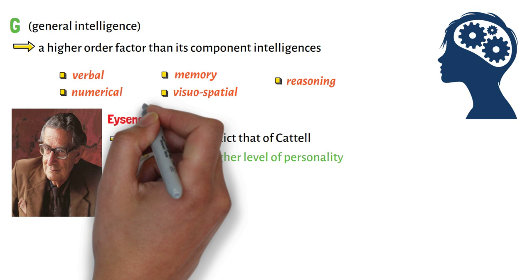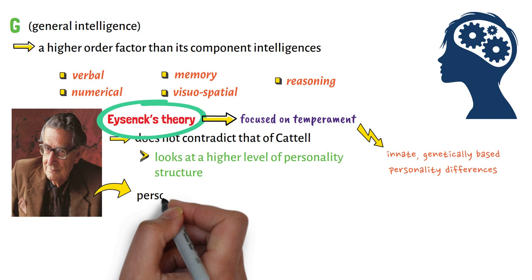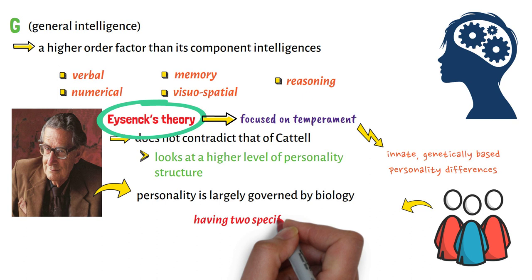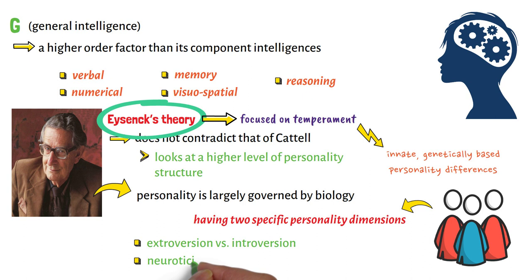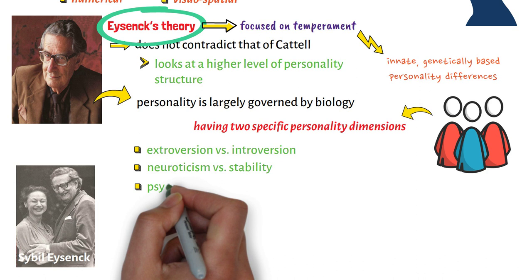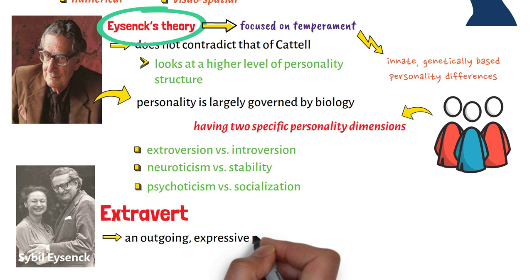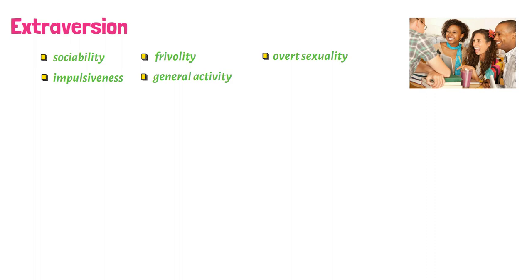Eysenck's theory focused on temperament — that is, innate, genetically-based personality differences. He believed personality is largely governed by biology, and he viewed people as having two specific personality dimensions: extroversion versus introversion, and neuroticism versus stability. After collaborating with his wife and fellow personality theorist Sybil Eysenck, he added a third dimension to this model: psychoticism versus socialization.